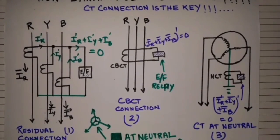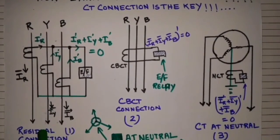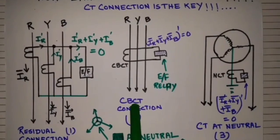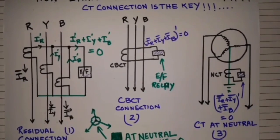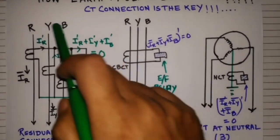We have shown three types of CT connection in this circuit diagram. In this video, the first one is residual connection, the second one is CBCT connection, and the third one is CT connected at neutral point.